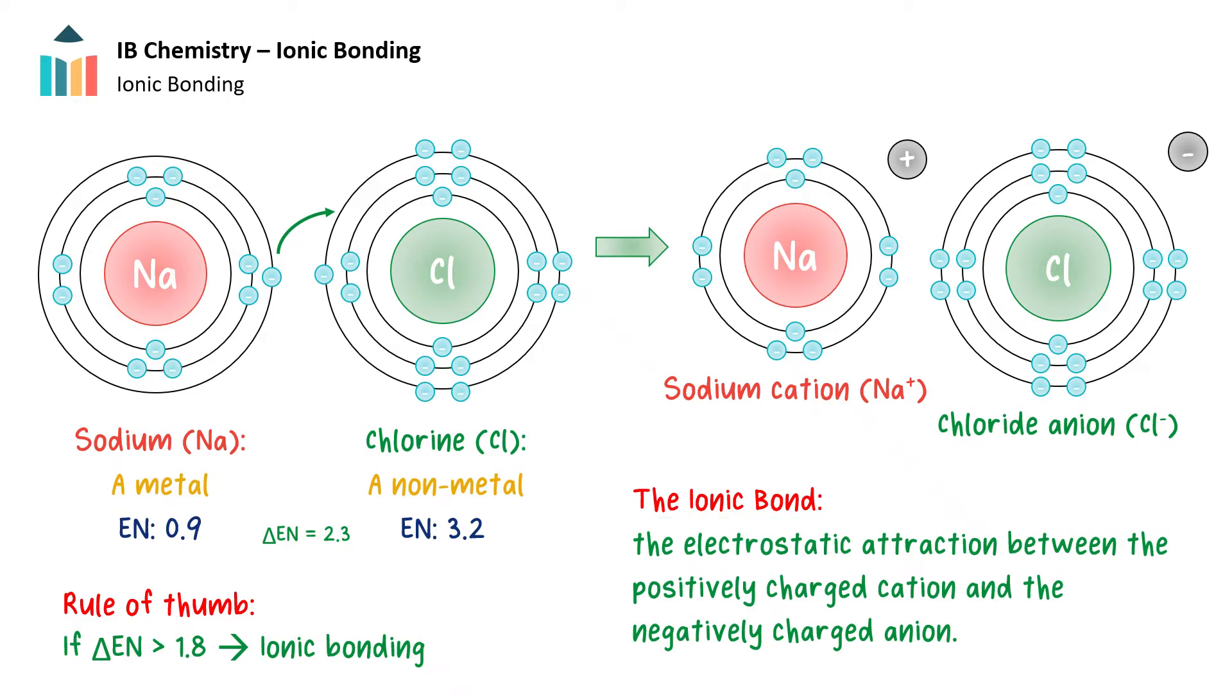Ionic bonds typically occur between a metal and a nonmetal due to a high difference in electronegativity. Recall that the electronegativity value measures how much a particular atom is attracted to electrons in a bond. If we look at sodium and chlorine, sodium has an electronegativity value of 0.9 compared to chlorine at 3.2.